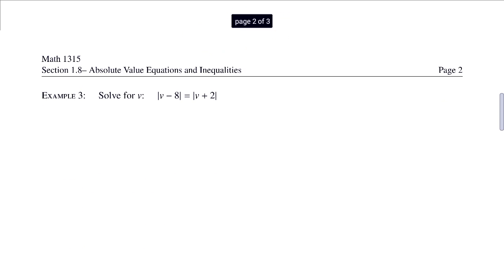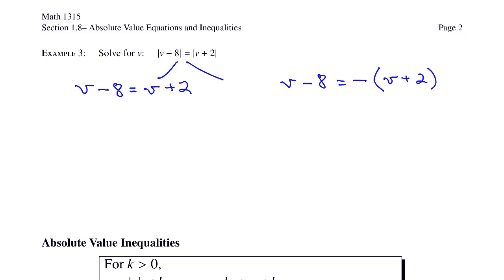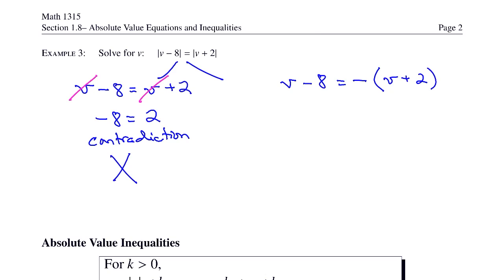Let's look at example 3. Solve for v: the absolute value of v minus 8 is equal to the absolute value of v plus 2. From our chart, we know that when we have an absolute value equal to another absolute value, we set up two equations. So: v minus 8 equals v plus 2, and v minus 8 equals negative (v plus 2). You need to use parentheses on the right side because the entire right side must be negated. Solving the left equation, v on the left and v on the right cancel, leaving negative 8 equals 2, which is a contradiction. So there is no solution from the left side, but we may still get a solution on the right side.